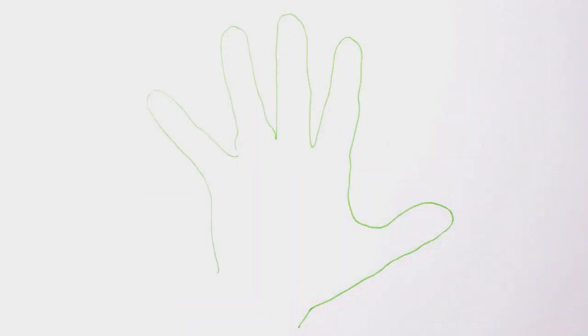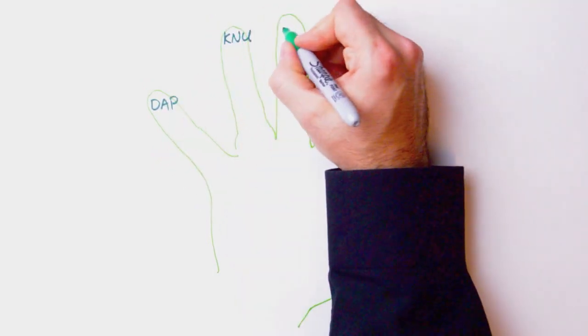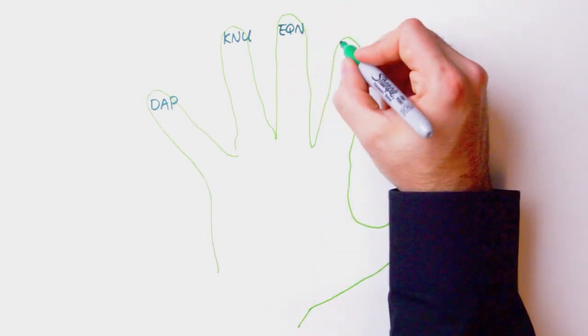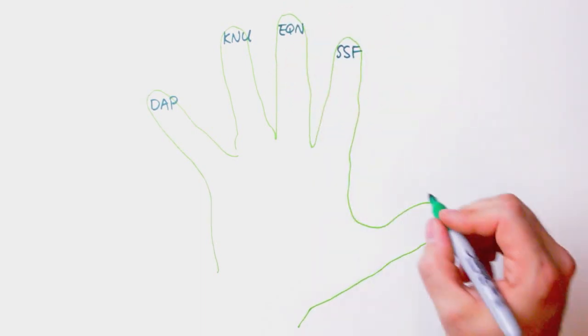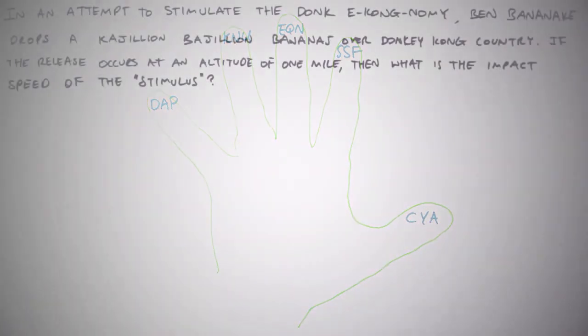So our problem solving method comprises five steps. First, draw a picture. Second, knowns and unknowns. Third, equation. Fourth, solve symbolically first. And fifth, check your answer. At the end of this video, we'll monkey around with a somewhat absurd but memorable mnemonic device for these five steps, so stay with us.